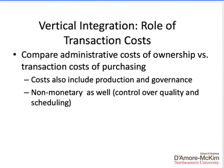In the presence of transaction costs, the vertical integration decision essentially involves comparing the administrative costs of ownership versus the transaction costs of purchasing the good or service — this is the make-or-buy decision. It's important to note that costs are not just monetary; they include governance costs, non-monetary costs, control over quality and scheduling, and time and effort spent by managers. If the administrative costs of ownership are less than the transaction costs of purchasing, the firm should vertically integrate; otherwise, it should continue to use the external exchange relationship.